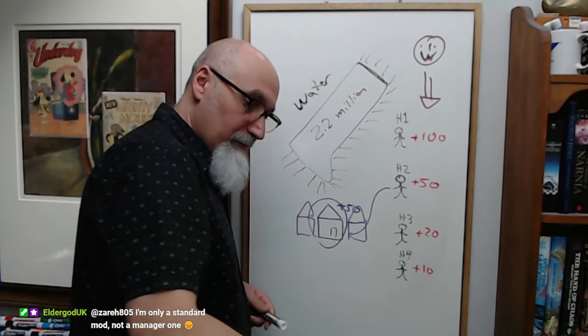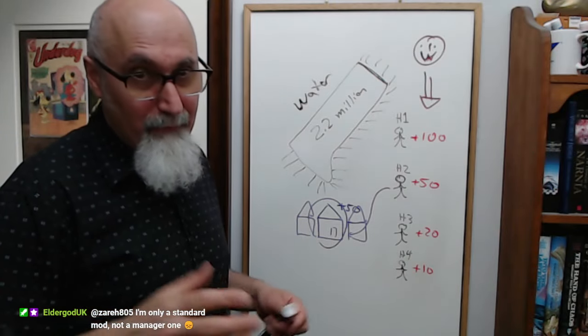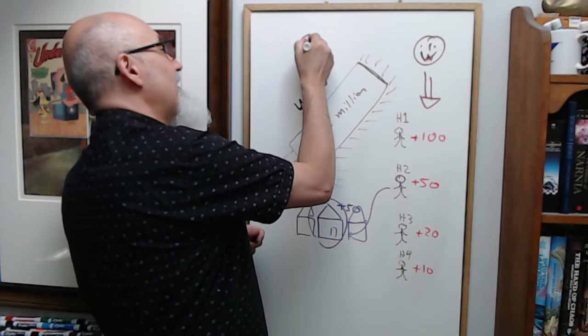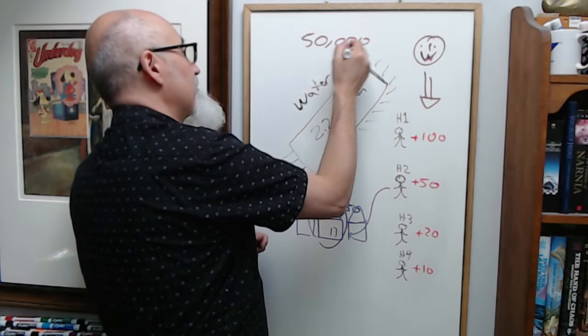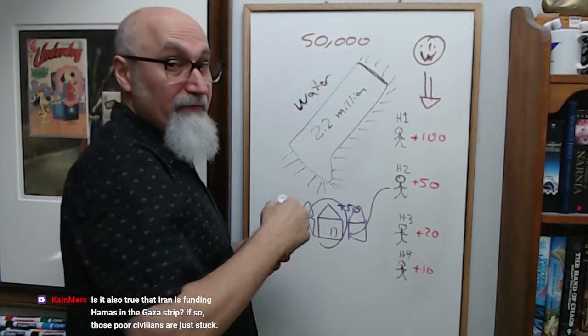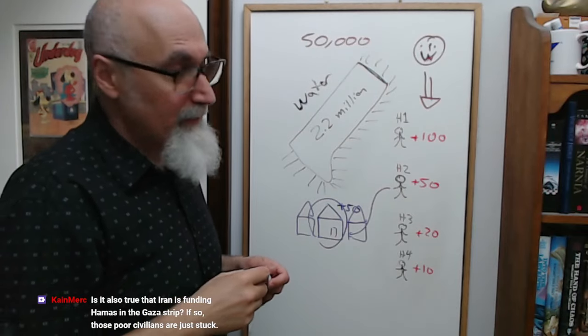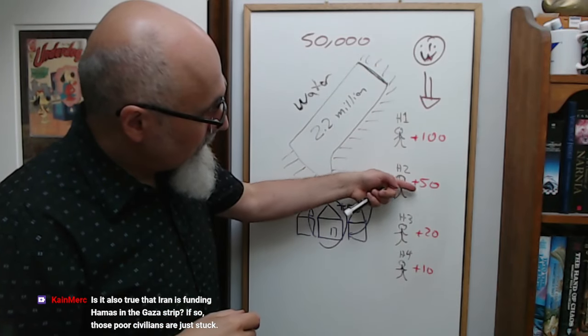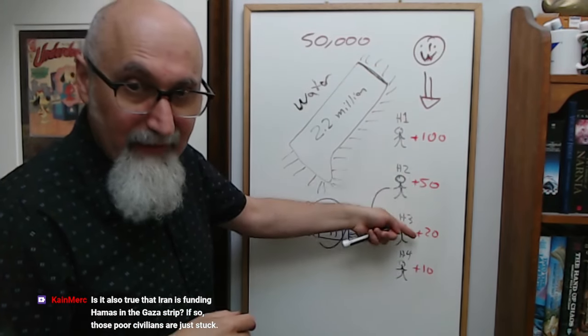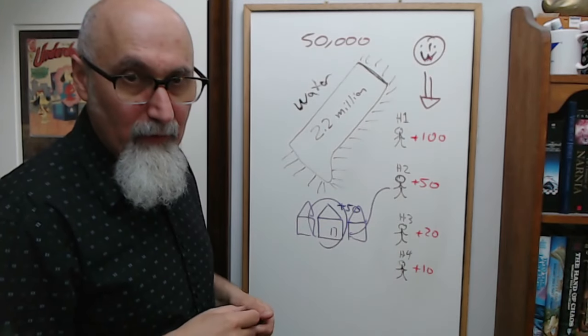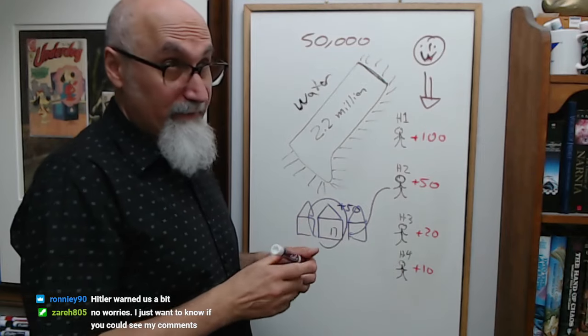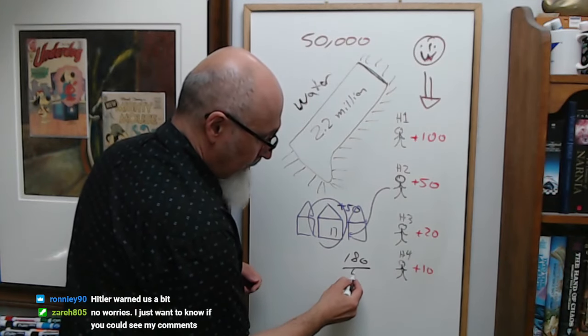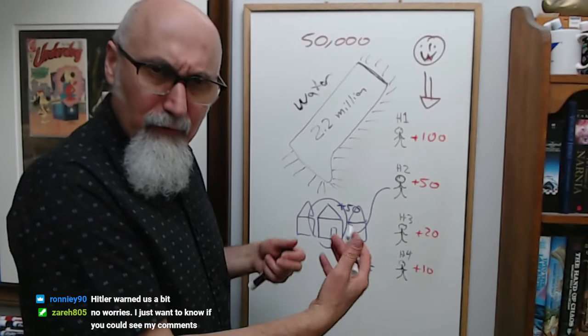Israeli government controls the amount of calories going into your land, and they write a program that gives a death rating to certain members of the population. Now, keep in mind, according to Israel, there was around 50,000 Hamas members. Let's take an average of this. 100, 50, 20, 10 divided by 4. What's 180 divided by 4? We're going to take an average. 2 goes into this twice. 2 goes into this 9 times. 2 goes into this once. 2 goes into this 45 times. So average is 45.